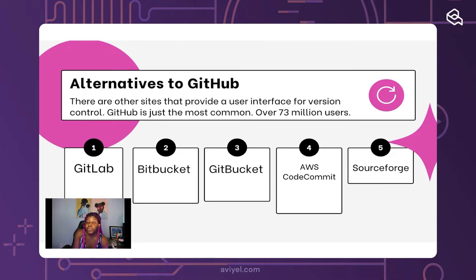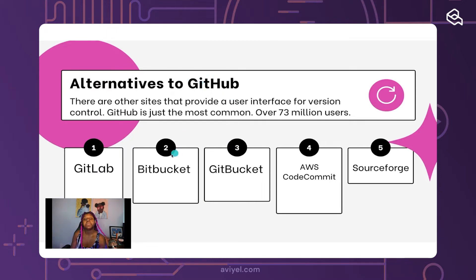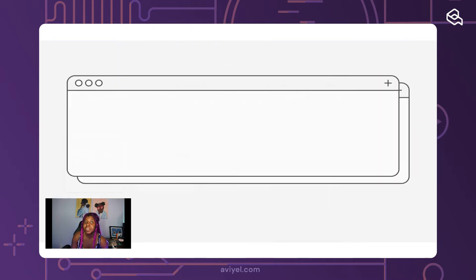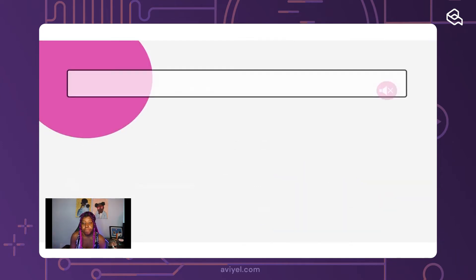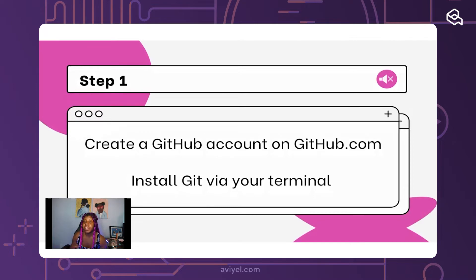Alternatives to GitHub do exist — GitHub is not the only place to store your code, just one of the most common with over 73 million users. You have GitLab, Bitbucket, GitBucket, AWS CodeCommit, and SourceForge. When I started my first job I thought I'd be using GitHub because that's what I learned in coding boot camp, but they opened up Bitbucket and I had no clue what it was. Just be aware these alternatives exist.